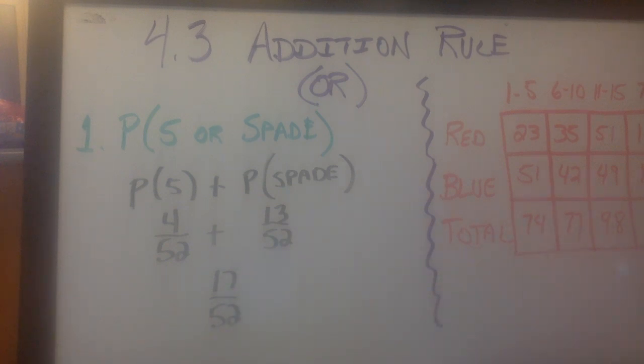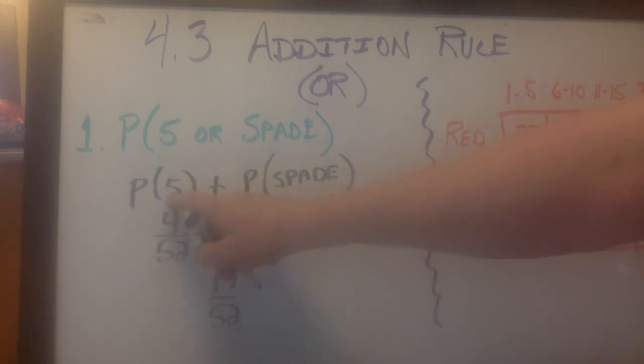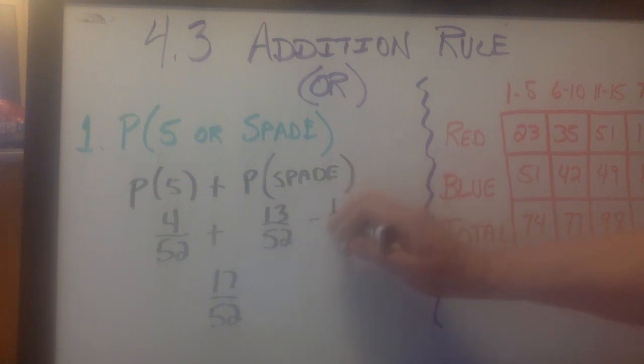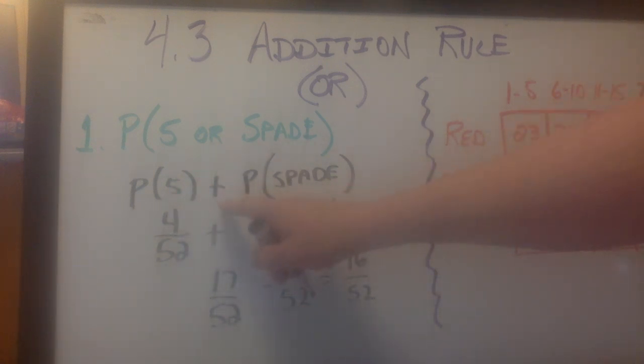We would add those together and get 17 out of 52. There is a problem. The problem is the 5 of spades. The 5 of spades is the problem, because I'm counting the 5 of spades here and I'm counting the 5 of spades here. So what I have to do is subtract the 5 of spades because I've already counted it.